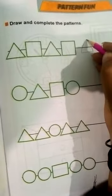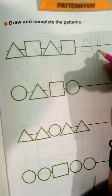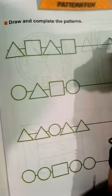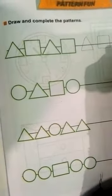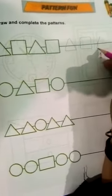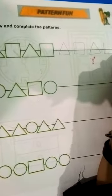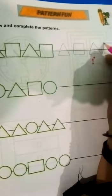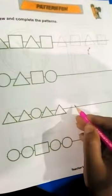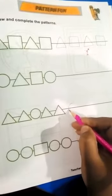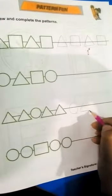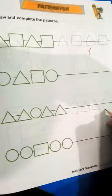Triangle. Square. Triangle. Square. Triangle. One circle. Two triangles. One circle.